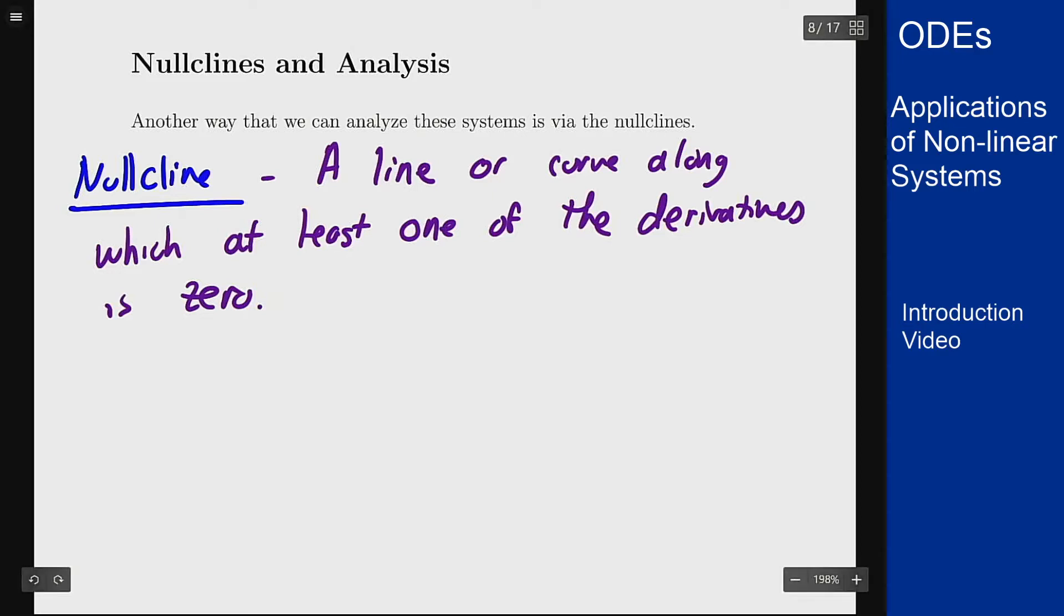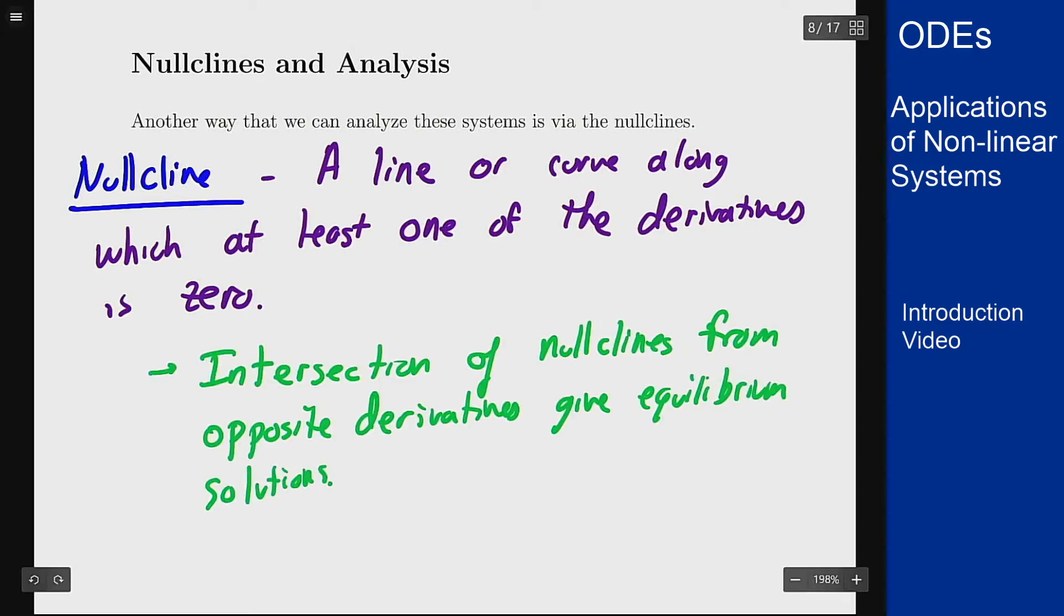If you think about it, an intersection of two appropriate nullclines from opposite derivatives gives equilibrium solutions. Because if each one corresponds to one being zero and they cross, it means at that point both are zero.